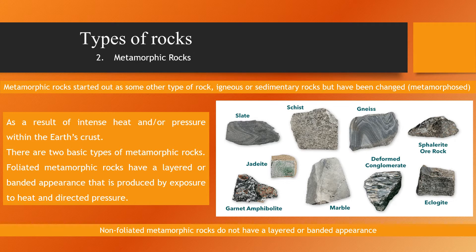One: foliated metamorphic rocks, such as gneiss, phyllite, schist, and slate, which have a layered or banded appearance that is produced by exposure to heat and directed pressure. Two: non-foliated metamorphic rocks, such as hornfels, marble, quartzite, and novaculite, which do not have a layered or banded appearance. See some examples of metamorphic rocks in the picture.